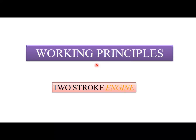In a two-stroke engine, all events — suction, compression, combustion, expansion, and exhaust — occur within just two strokes. The two main strokes are compression and exhaust. During the exhaust stroke, depending on the type of engine — whether it is an SI engine or a CI engine — air or air-fuel mixture enters the combustion chamber during the expansion stroke.